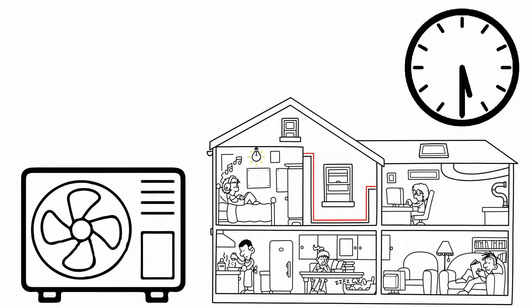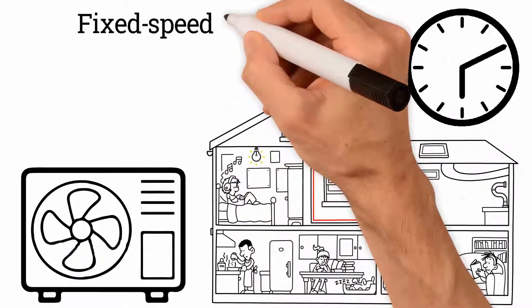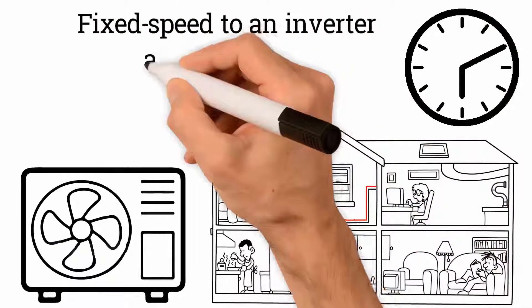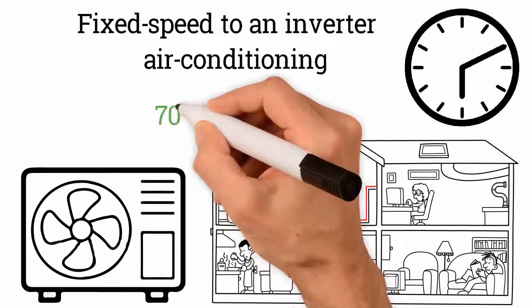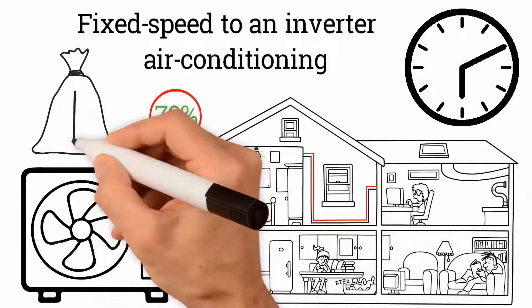After three hours of work, your air conditioning system will go from being an old fixed speed to an inverter air conditioning unit that saves over 70% power, saving you lots of money.